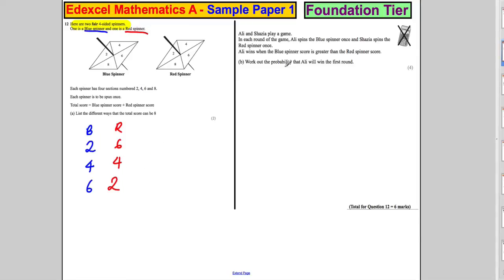So you can either get 2 and 6, 4 and 4, or 6 and 2 - those are your options. Now Ali and Shazia play a game. In each round, Ali spins the blue spinner once and Shazia spins the red spinner. Ali wins when the blue spinner score is bigger than the red spinner score. Work out the probability that Ali will win the first round.